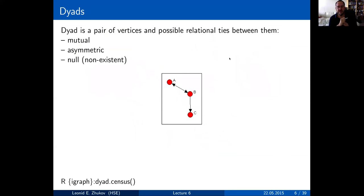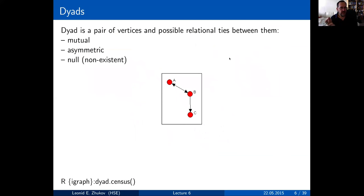The second quick topic of today's lecture is about local structures in the graph. These definitions come from sociology and may seem trivial, but they're also pretty useful because they give you some understanding of graph structure. One of the definitions is what's called dyads.